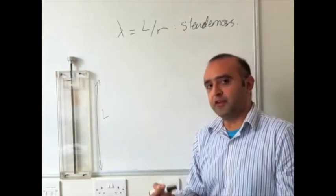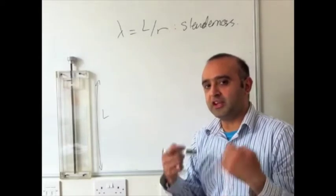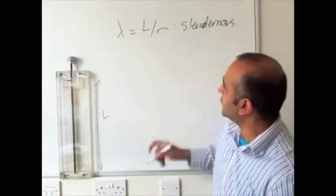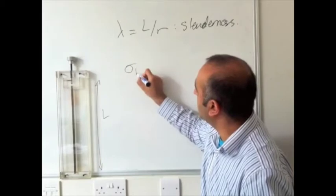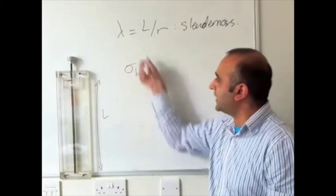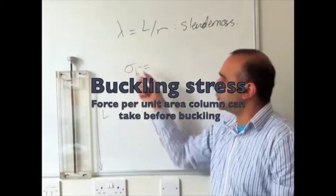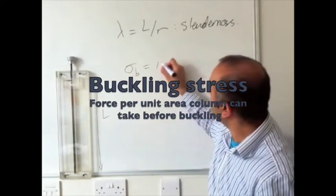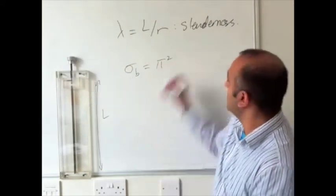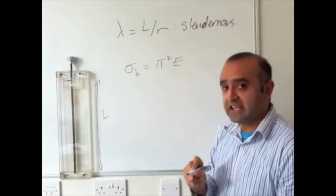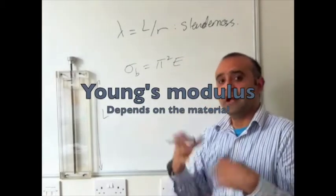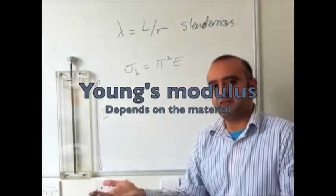So from this, we can use a formula that was derived by Leonard Euler in 1744. He actually found that the buckling stress, the force, effectively the force per unit area before it buckles, is equal to pi squared, multiplied by material constant E, which is called the Young's modulus, and this has a particular value for any given material.